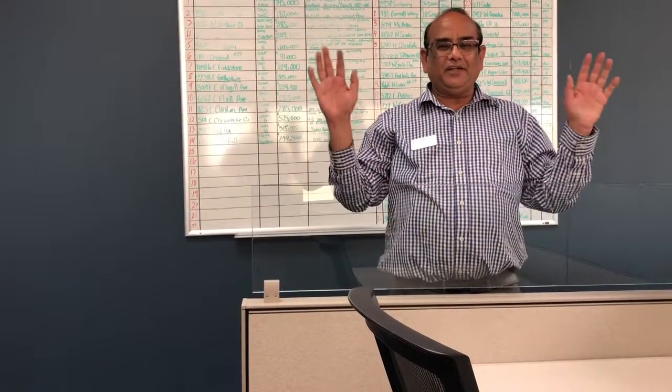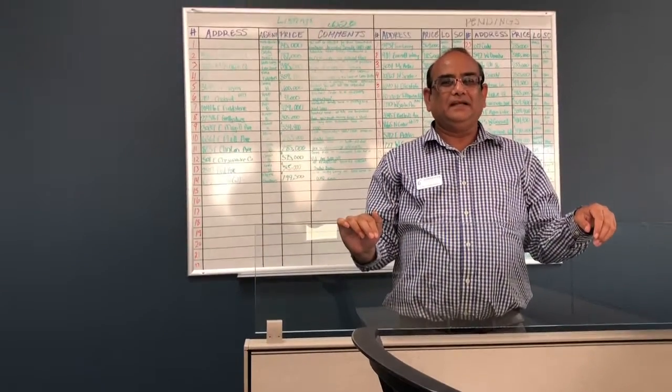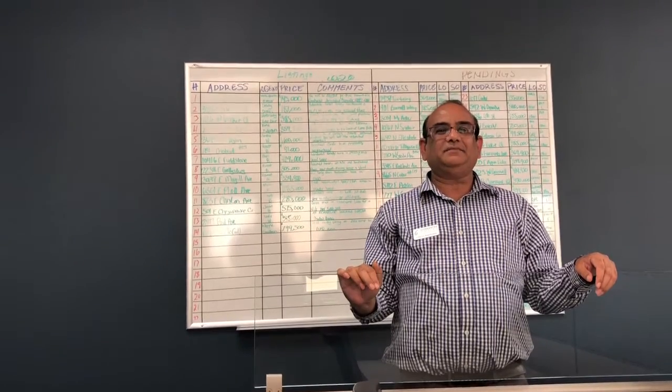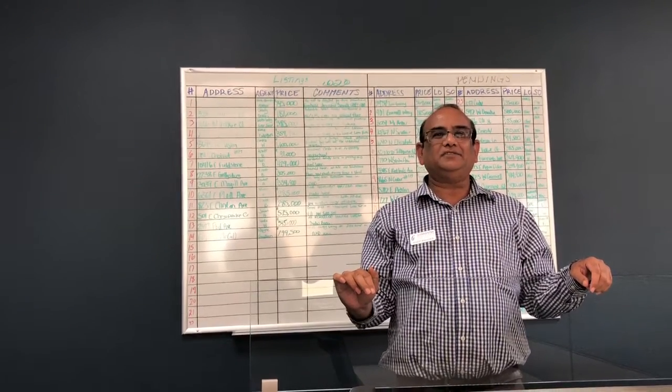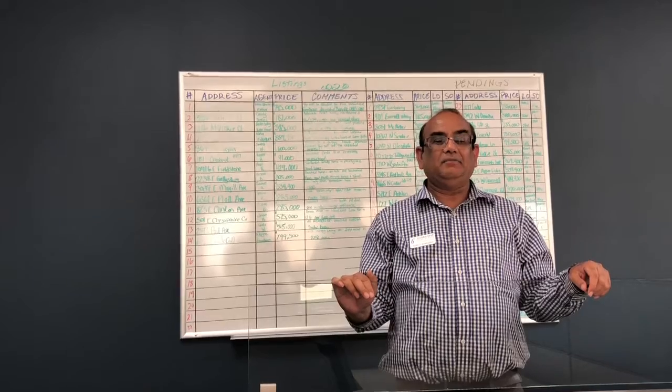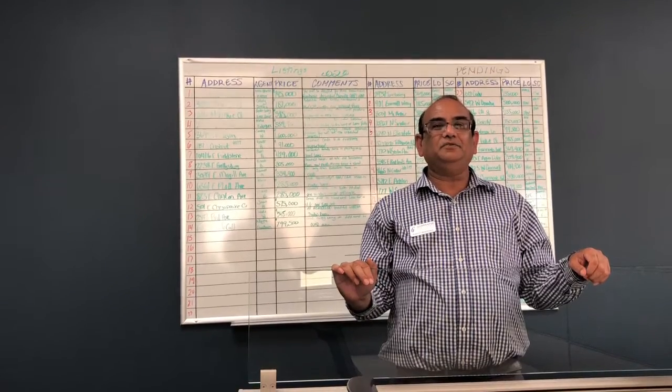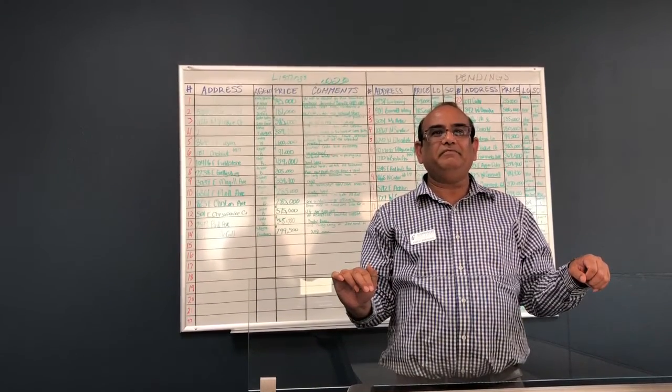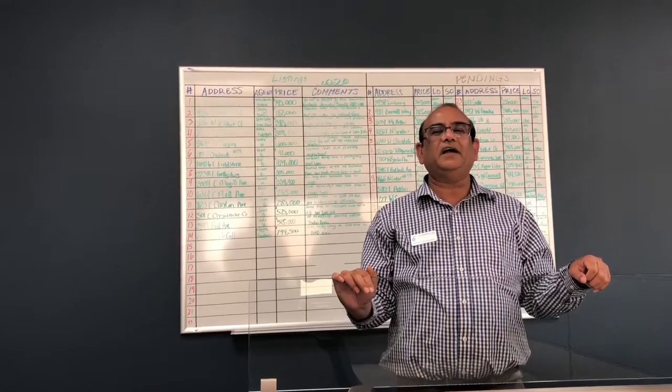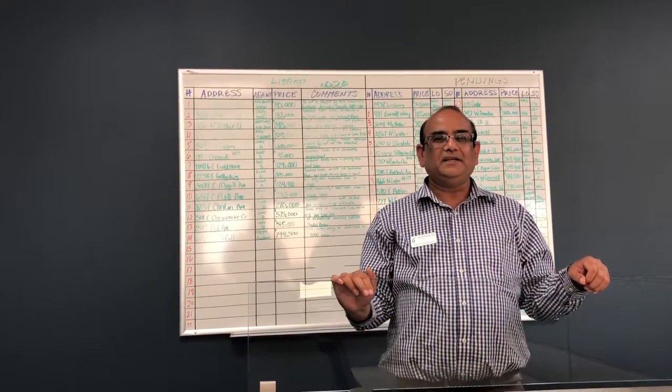Hi guys, this is Pudeet Bhargava, your favorite realtor in Clovis and Fresno area. My phone number is 559-274-7025, DRE number 01859500. So today I'm going to tell you about the Fresno and Clovis market.